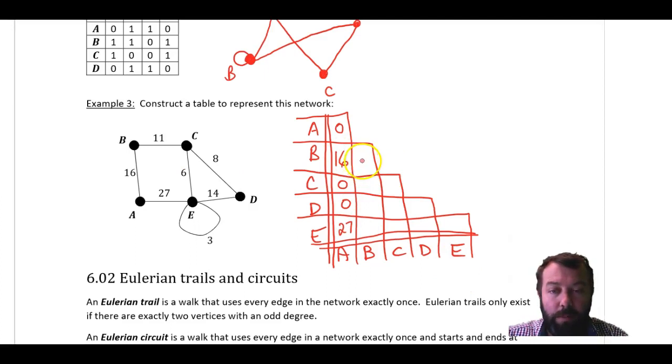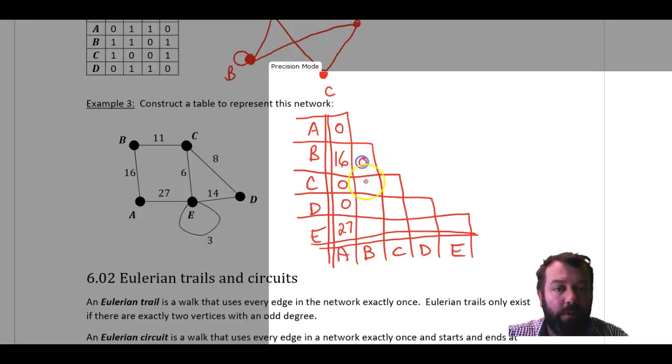Now, we'll have a look at B. There's no loop at B. B is connected to A, already covered, and C is 11. So 0, 11, 0, 0.